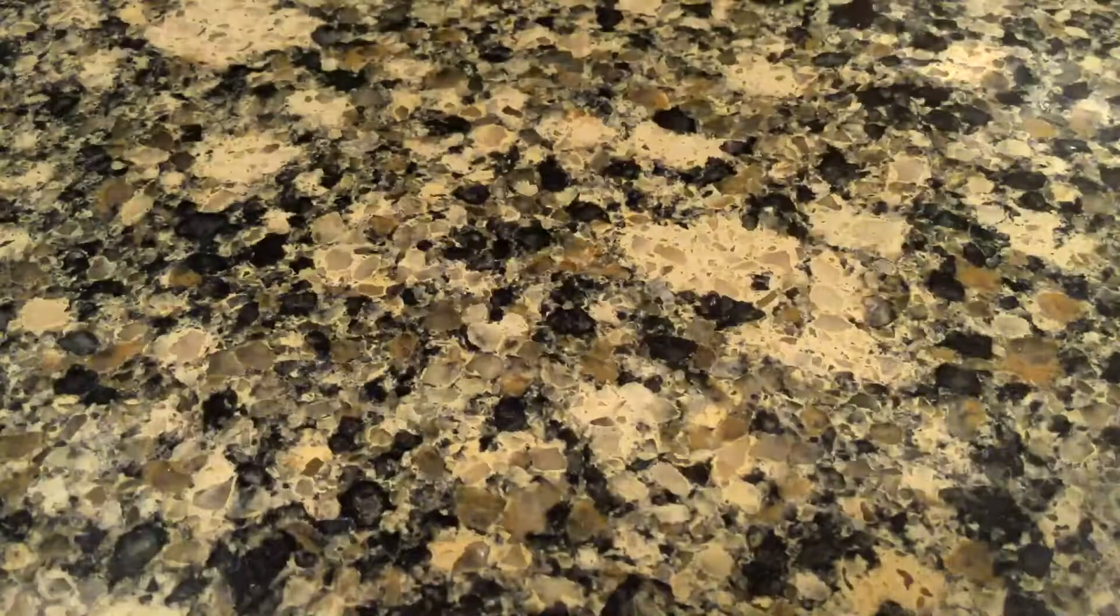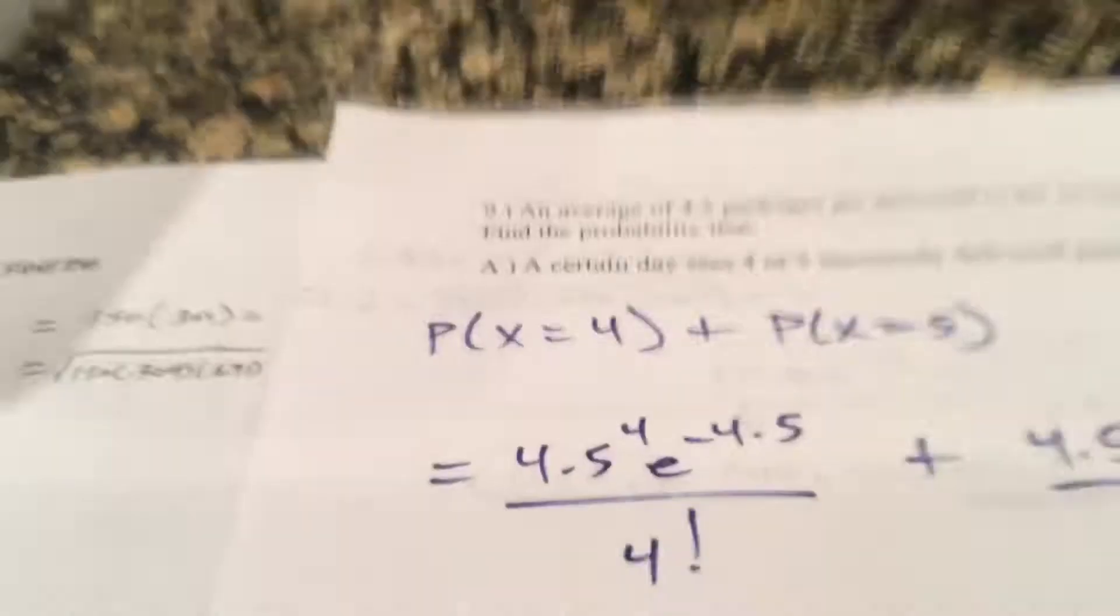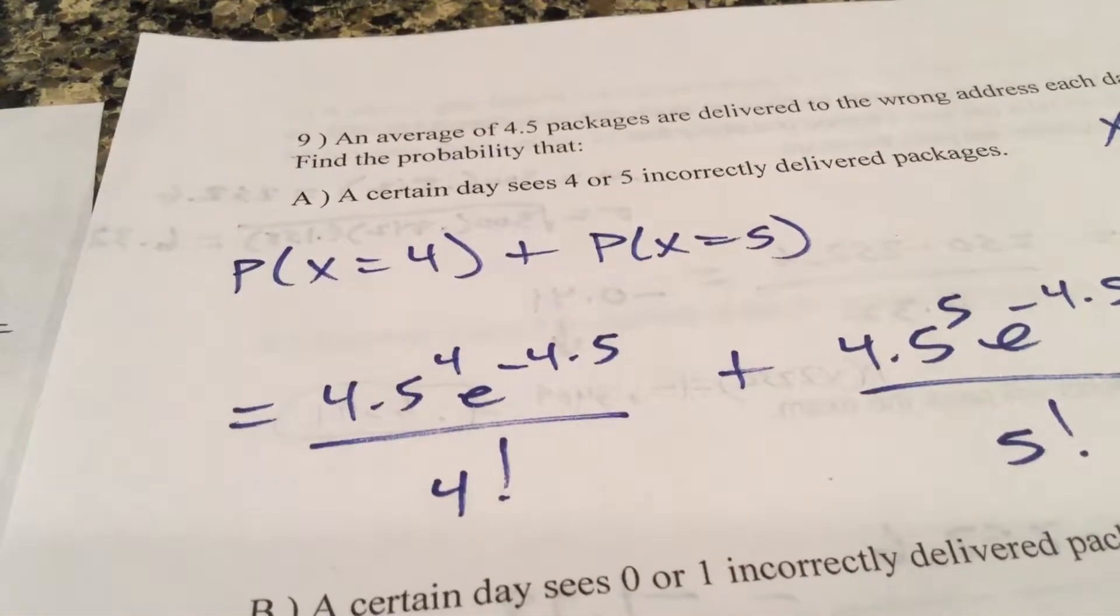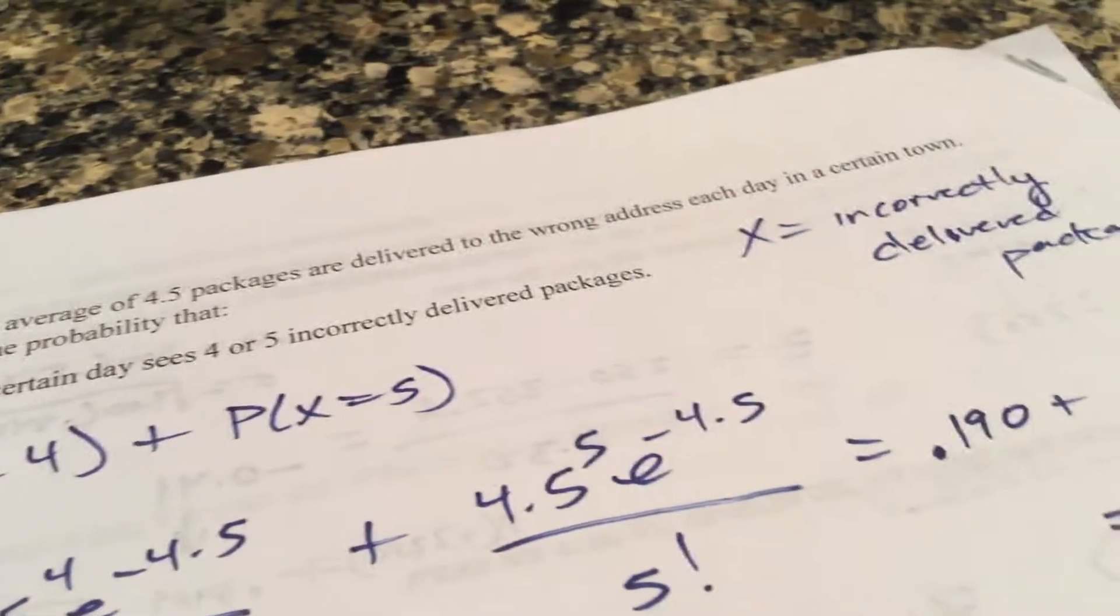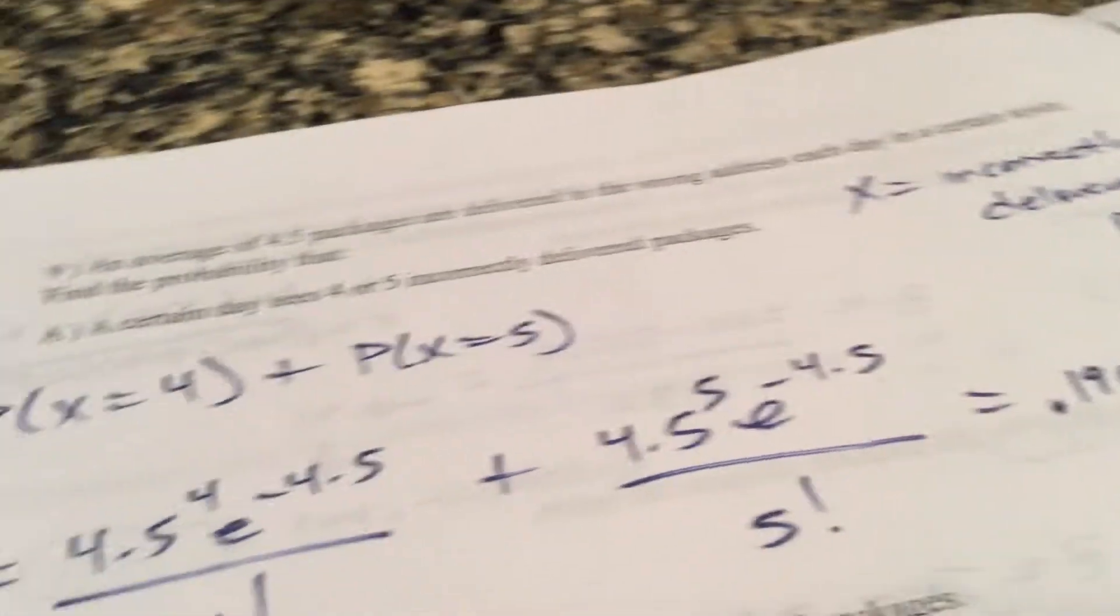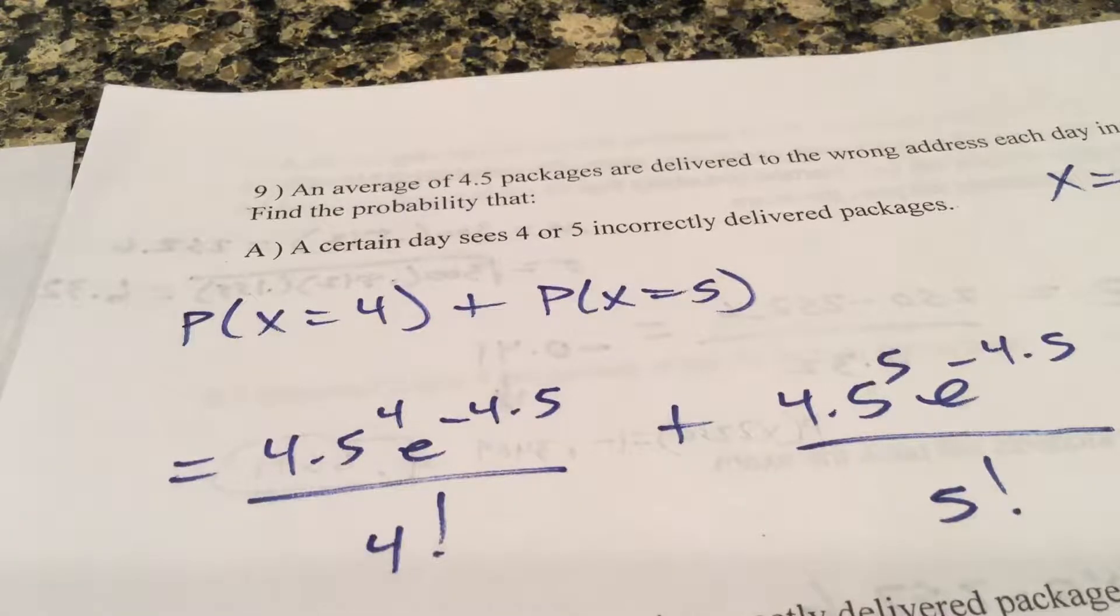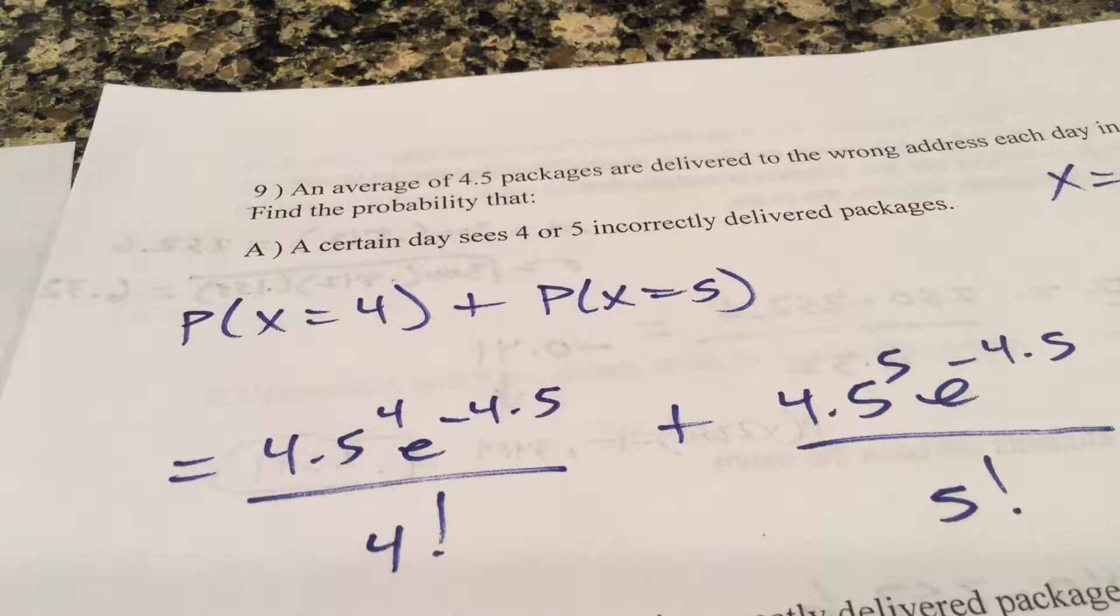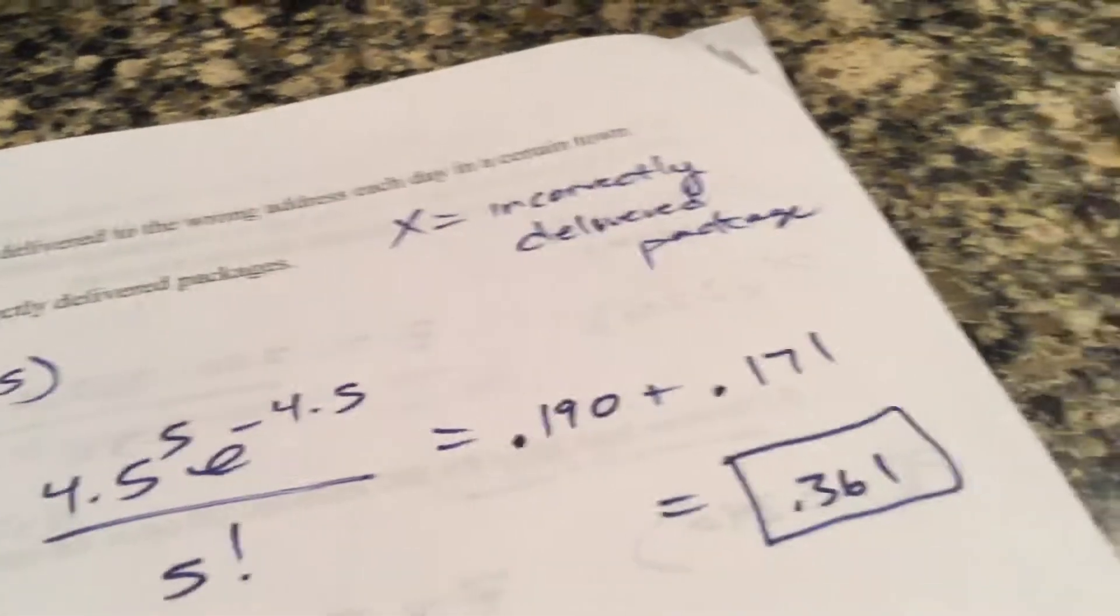And then last question. On the video I have online has a different number nine, you guys are missing a number nine I believe. So here's the one you're getting in class tomorrow. An average of 4.5 packages are delivered to the wrong address each day in a certain town. Find the probability that four or five incorrectly delivered packages are found during the day. So that's probability x is four plus probability x is five.